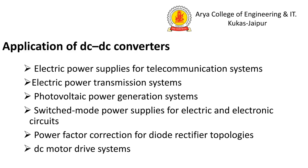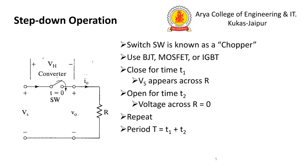Applications of DC to DC converters include: electric power supply for telecommunication systems, electric power transmission systems, photoelectric power generation systems, switch mode power supplies (SMPS) for electrical and electronic circuits, power factor correction for diode rectifier topology, and DC motor drive systems — also used for speed control of DC motors.